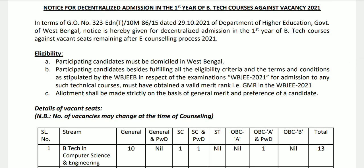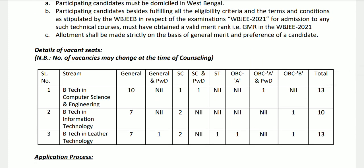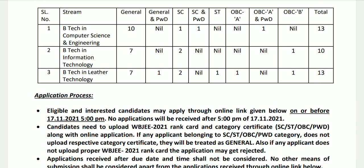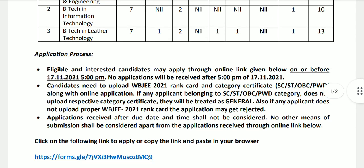You will see huge vacancies because of decentralized counseling. In IT there are 10 vacancies and in laser technology there are 13 vacancies. You have 2-3 times to apply. Candidates need to upload their OFG 2021 rank card and category certificate along with the online application form. If you have ST, SC, OBC, or PwD status, upload the respective category certificate, but they will be treated as general since there is no ST/SC/OBC vacancy.